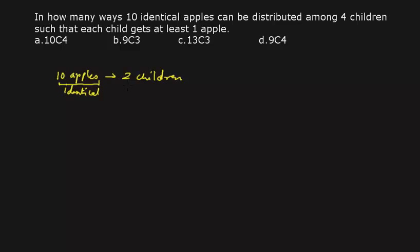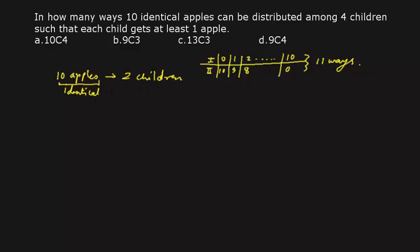For example, you can distribute all 10 apples to one child. Suppose there are two children, child 1 and child 2. I can give 0 apples to the first and 10 to the second; 1 to the first and 9 to the second; 2 to the first and 8 to the second — and so forth up to 10 to the first and 0 to the second. That gives 11 different ways. Now if the condition is that each child must get at least one apple, then the 0-and-10 and 10-and-0 options are excluded, and the answer becomes 9 ways.